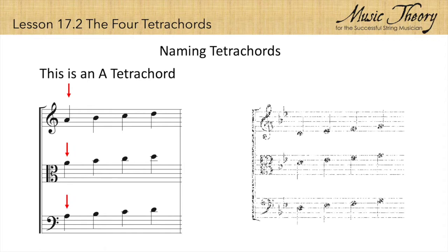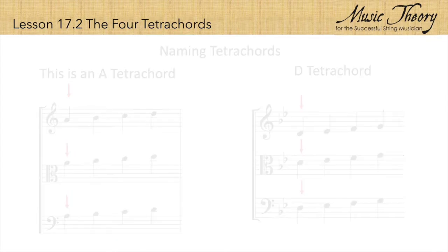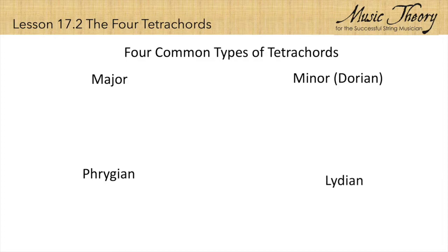In the example on the right, the bottom note is D, so this is some type of D tetrachord. But what types are they? There are four common types of tetrachords: major, minor, Phrygian, and Lydian.